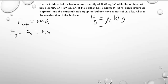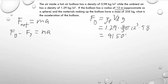The density of the ambient air is 1.29. The volume displaced is that of a 12-meter radius sphere: 4/3 π r³, so 4/3 π times 12 cubed, then multiplied by 9.8. Throwing all that into the calculator, we get a whopping 91,505.7 newtons of buoyant force.